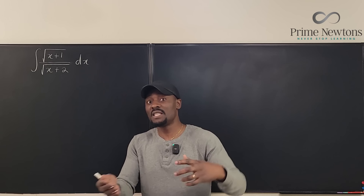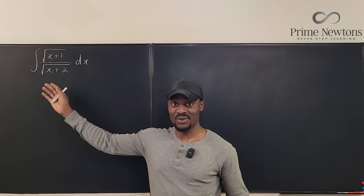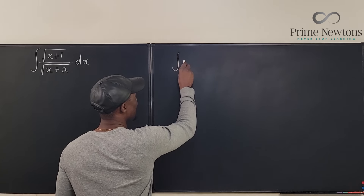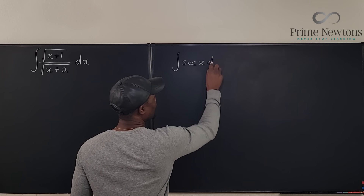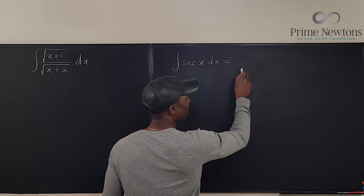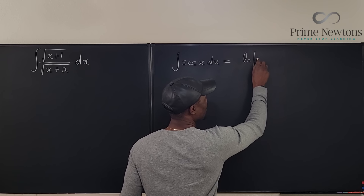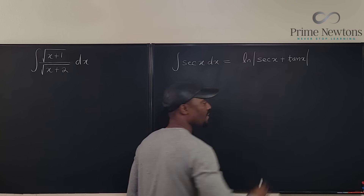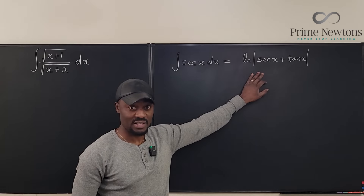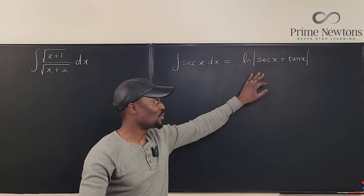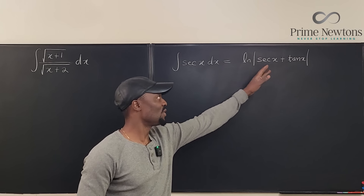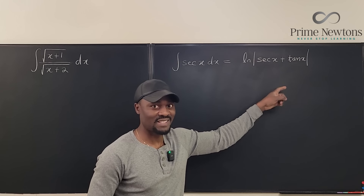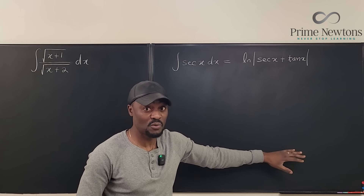Two things you must know. First, when you integrate secant x, you get the natural log of the absolute value of secant x plus tan x. This is the most common form and easy to remember because the derivative of secant is secant x tan x. There are four other ways to write this.